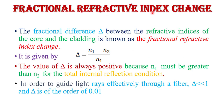Fractional refractive index change is denoted by delta. It is the fractional difference between the refractive index of the core and cladding, given by delta = (N1 − N2) / N1, where N1 is the refractive index of core and N2 is the refractive index of cladding. N1 is always greater than N2, so delta is always positive. To guide light effectively through a fiber, delta must be less than 1 and is typically on the order of 0.01.